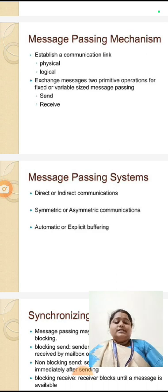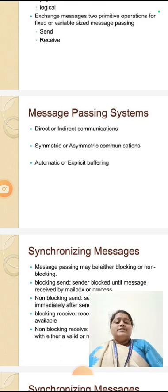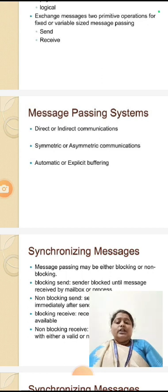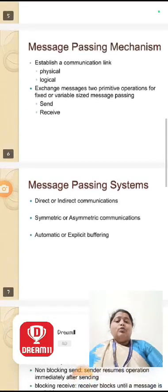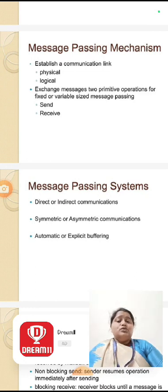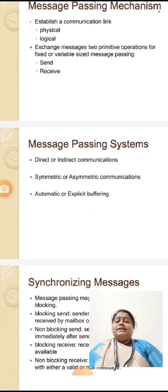We can see how the message has been passed. It can pass either by direct or indirect communication. The second method is it can pass symmetrically or asymmetrically. The third is it can pass using automatic or explicit buffering. These are the three things in message passing mechanism.